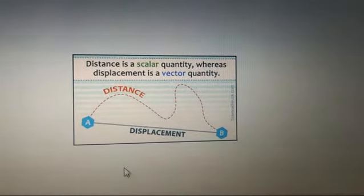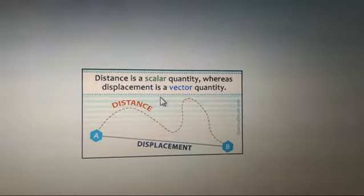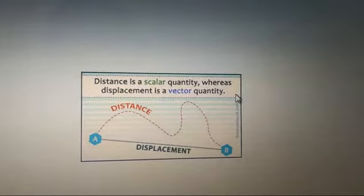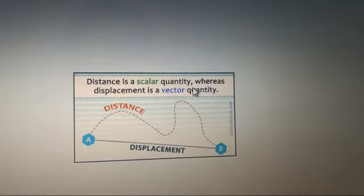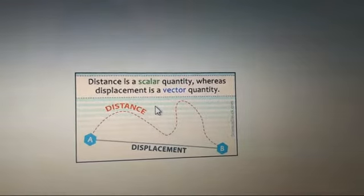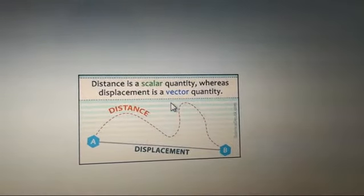Now remember that distance is a scalar quantity and displacement is a vector quantity. Scalar quantity means it requires only magnitude for its description. Magnitude means how many kilometers or how many meters it is.